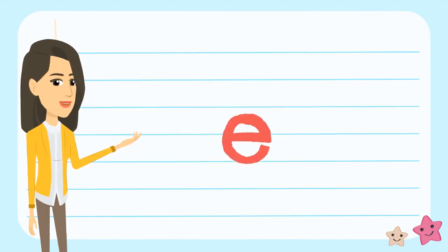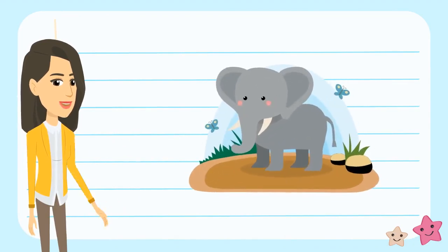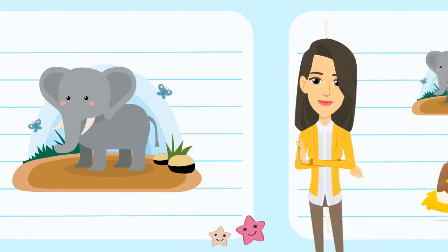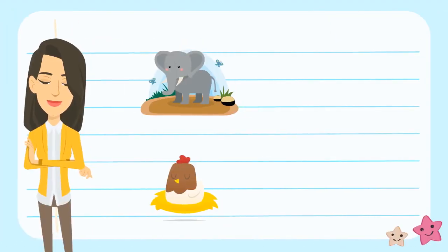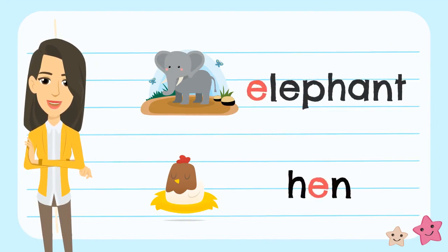The letter E has many sounds, but the short E sound makes the E sound like an elephant. Examples of short E words are elephant and hen. The E in both words makes the E sound.